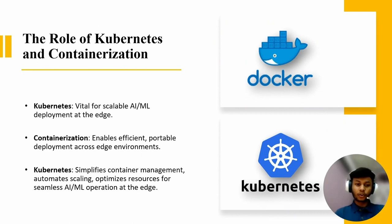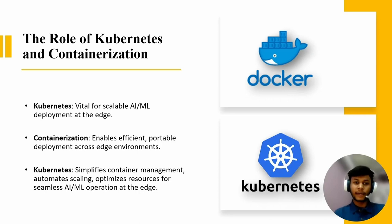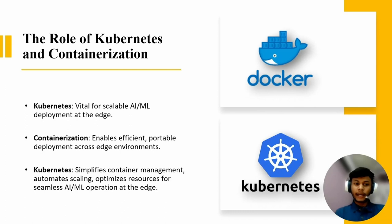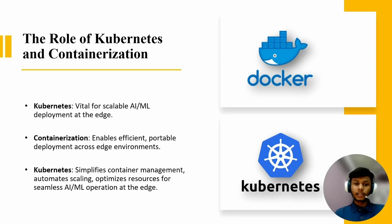Let's talk about the role of Kubernetes and containerization. Kubernetes is an open source container orchestration platform that plays a vital role in deploying and managing AI and ML applications at scale. Containerization allows for the efficient encapsulation of AI and ML models, making them portable and easily deployable across different edge computing environments. We can use Docker, among many other container environments. Kubernetes also simplifies the management of containers, automates scaling and optimizes resource utilization, ensuring seamless operation of AI and ML workloads at the edge.